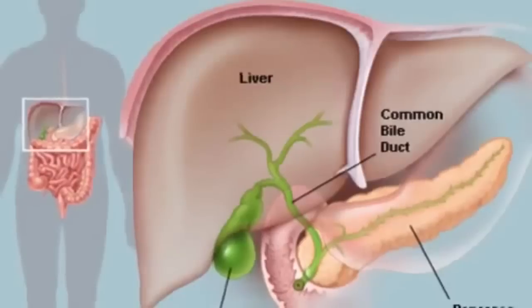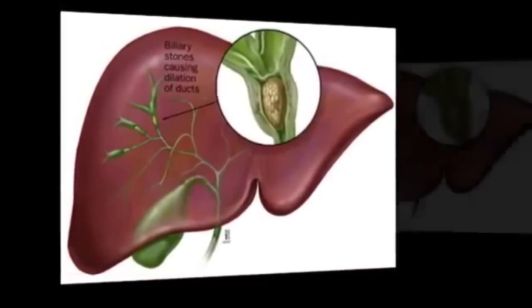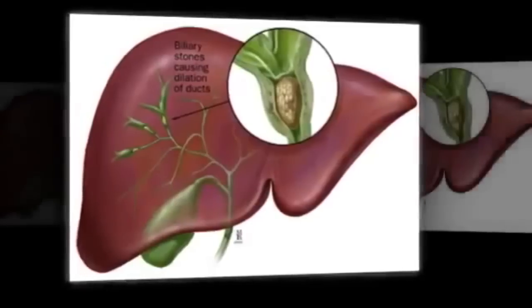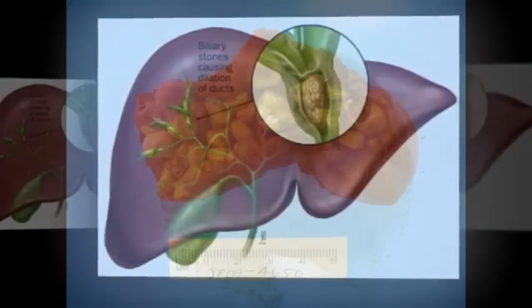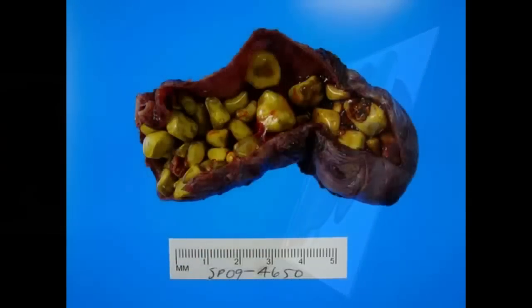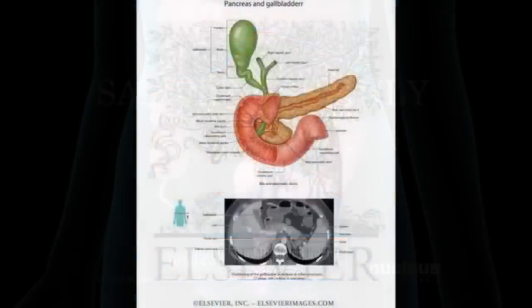The next thing that bile does in the intestine is to emulsify the fats and oils in the food that we eat. Emulsification is the process by which fats and oils are made water-soluble. To understand emulsification, think of soap. It's next to impossible to rinse grease off a dish with just plain water, but if you put a drop of soap on the dish, the grease washes right off. That's because soap is an emulsifier — it allows fats and oils to mix with water. Bile is the body's natural emulsifier, and it is what allows us to digest the fats and oils we eat.